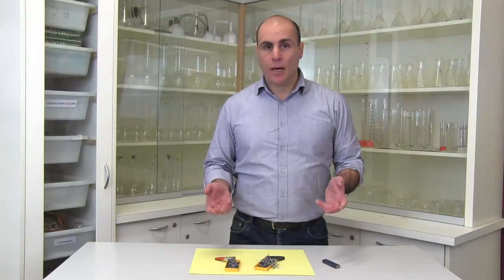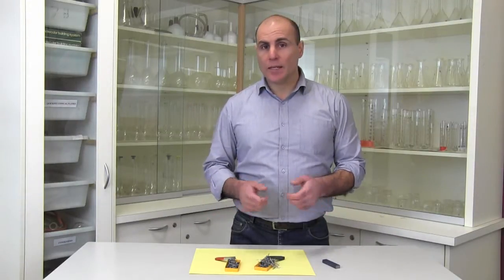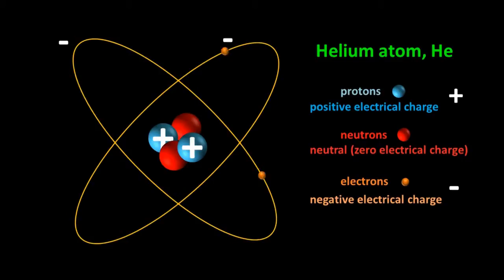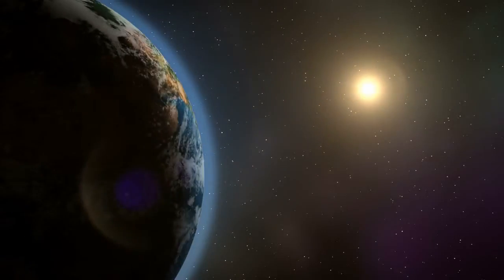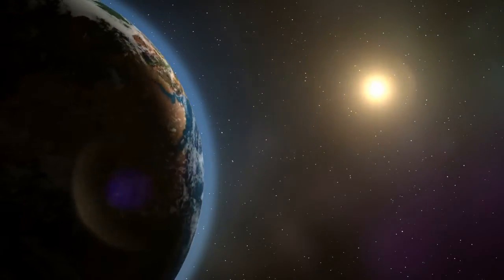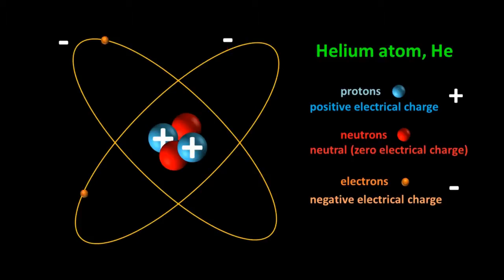Electrical charge is similar, but is described as being either positive or negative. The positively charged protons attract the negatively charged electrons and stop them from flying away. In that sense, it's a little like the gravitational force of attraction between the sun and the earth, which keeps us orbiting the sun. The electrons don't fall into the nucleus because they've got energy and they're moving around the nucleus.